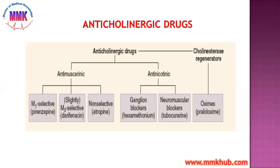The third category is non-selective anti-muscarinics, which includes Atropine. Non-selective means it works on all receptors from M1 to M5. Then we have anti-nicotinic drugs: ganglion blockers, which include Hexamethonium, and neuromuscular blockers. Nicotinic receptors on ganglia are blocked by ganglion blockers, and those on muscles are blocked by neuromuscular blockers.